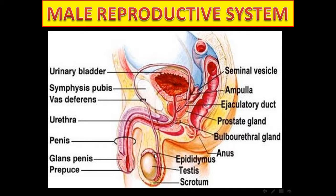The duct system includes the epididymis, vas deferens, ejaculatory ducts, and part of the urethra. The accessory glands include seminal vesicles, bulbo-urethral gland, and prostate.